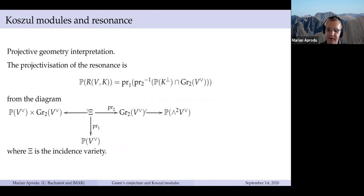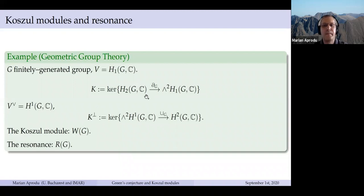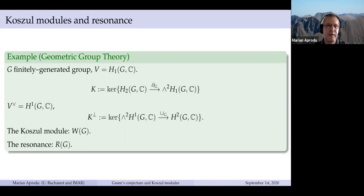We have many examples. The first example was the original one in geometric group theory: if G is any finitely generated group, you take the homology of this group with complex coefficients, take K-perp to be the kernel of the cup product map, and then with this setup we have a Koszul module and a resonance, which play a role in geometric group theory. In algebraic geometry, if X is a smooth projective variety and E is a rank-two vector bundle, K-perp is defined as the kernel of the determinant map. The resonance is zero if and only if E doesn't have a sub-pencil.